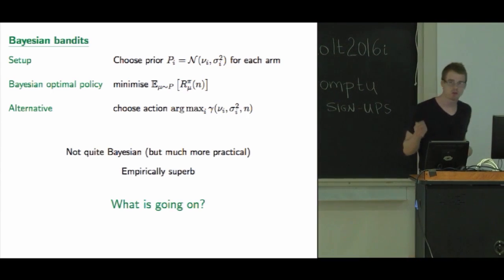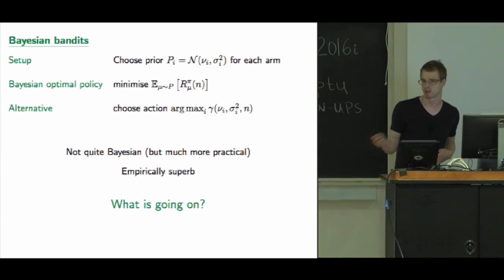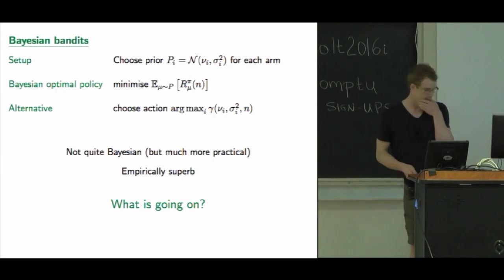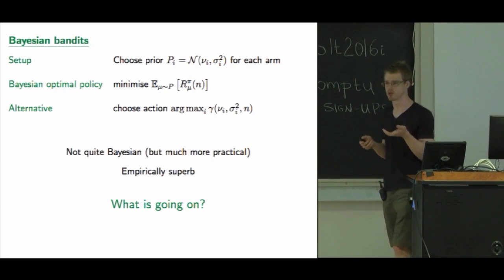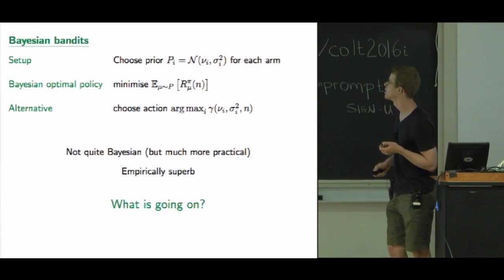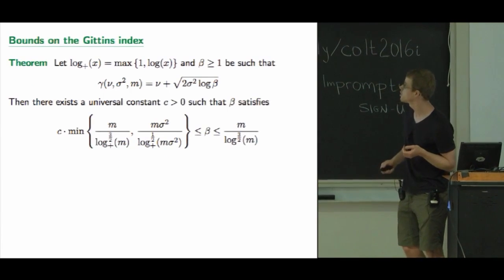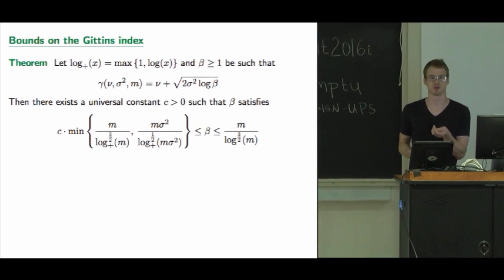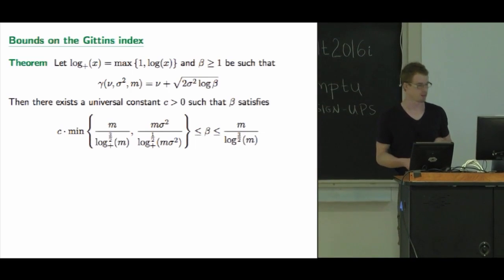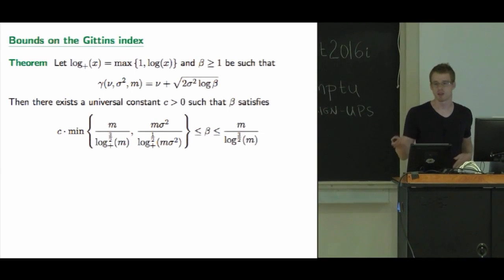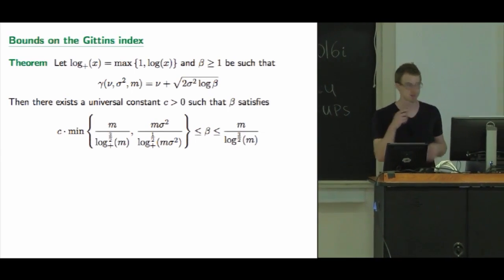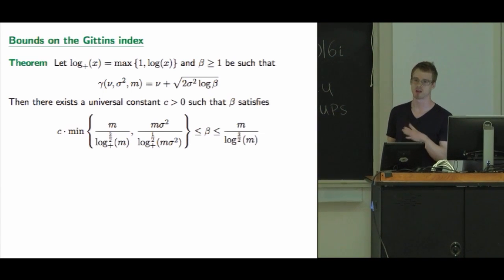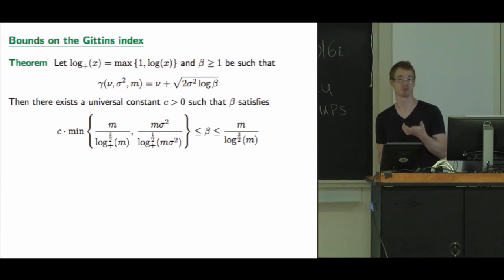This is really great. It's not quite Bayesian, but it's sort of semi-practical and empirically superb — this thing really works well. We want to understand why it is so good in a frequentist sense, which is the purpose of this talk. The main results come from bounding the Gittins index. The main theorem of the paper is a really tight, totally finite-time bound on what the Gittins index looks like.